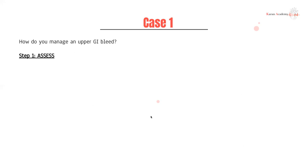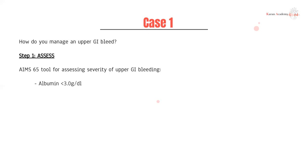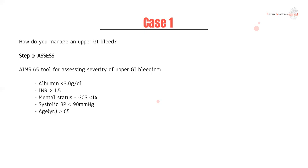How do you manage an upper GI bleed? Step one: assess. AIMS-65 is a really good tool for assessing the severity of upper GI bleeds, especially if you suspect a variceal bleed. The criteria are: albumin less than 3, INR greater than 1.5, reduced GCS, systolic BP less than 90, and age more than 65. This is your standard approach for variceal bleed assessment. For this particular case, the patient seems to have had a peptic ulcer bleed, but the AIMS-65 is an excellent tool for variceal bleed severity scoring.